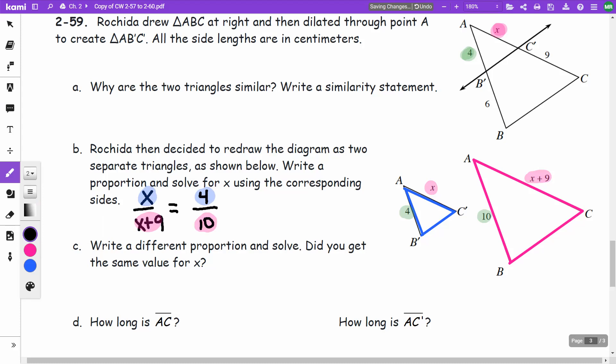Cross multiply and solve. When I cross multiply, I'm going to take X times 10, which is 10X. I'm going to take 4 times X plus 9, which is 4X plus 36, because the 4 multiplies with both of them. I'm going to subtract 4X from both sides. I get 6X is equal to 36, so X is equal to 6.